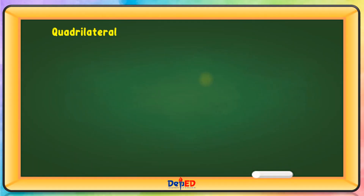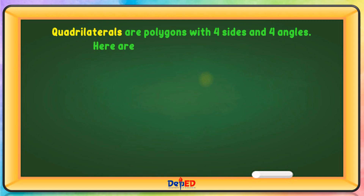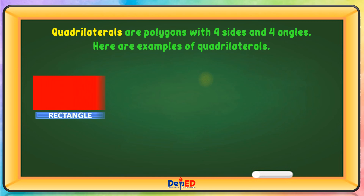Quadrilaterals are polygons with four sides and four angles. Here are some examples of quadrilaterals.